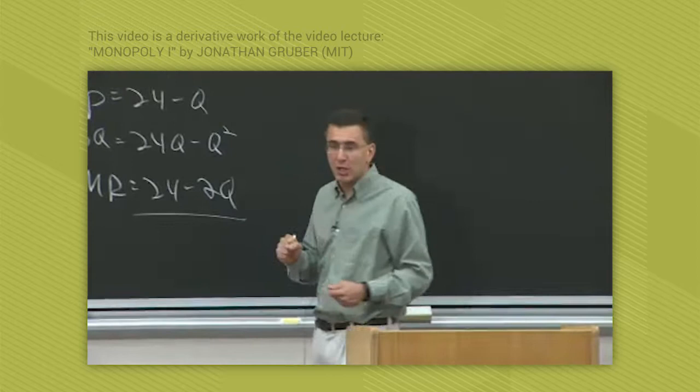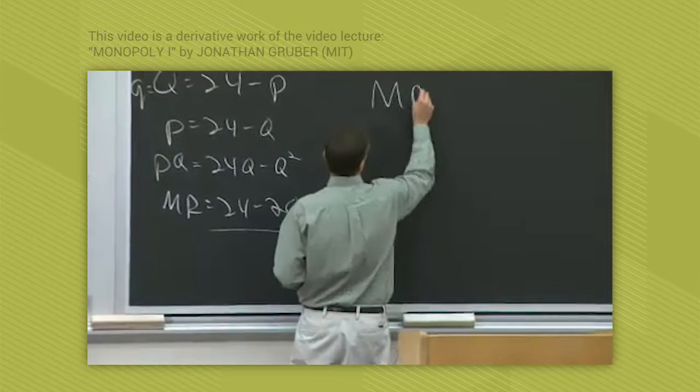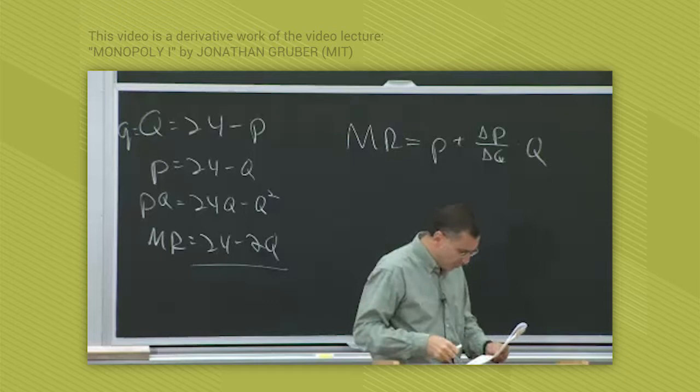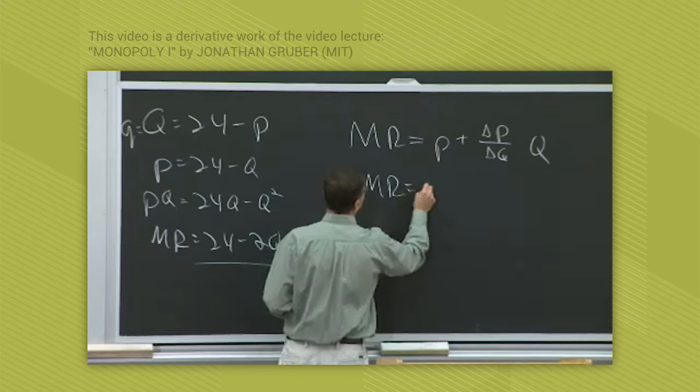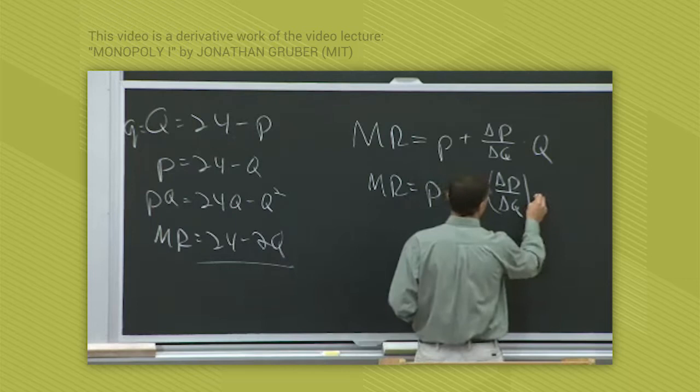There is a very important relationship between marginal revenue and the elasticity of demand. Let's take our marginal revenue equation and put it back in changed terms: P plus delta P over delta Q times Q. Now let's multiply and divide by P. So marginal revenue can be rewritten as P plus P times delta P over delta Q times Q over P.